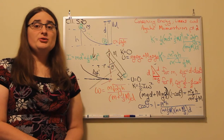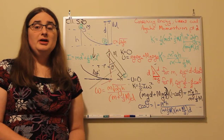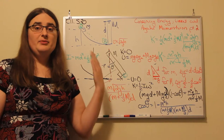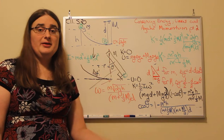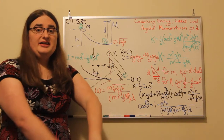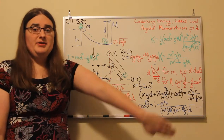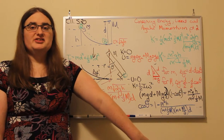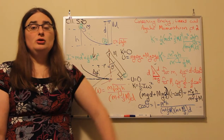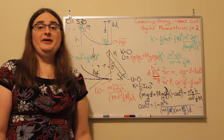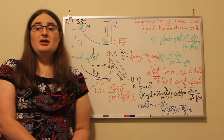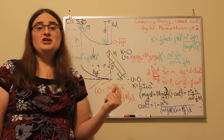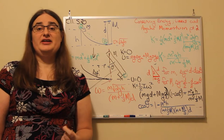This is part two of a problem taking a look at what happens if a mass slides down a frictionless ramp, collides with a bar on a pivot, and then that pivot swings out to some angle before stopping. We want to come up with an expression for how to figure out what that final angle is.